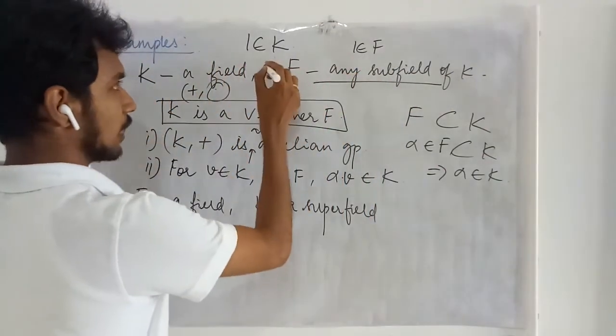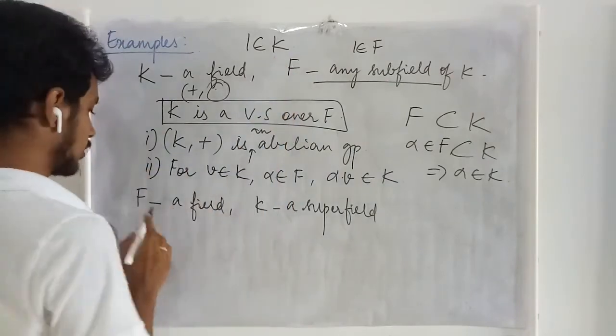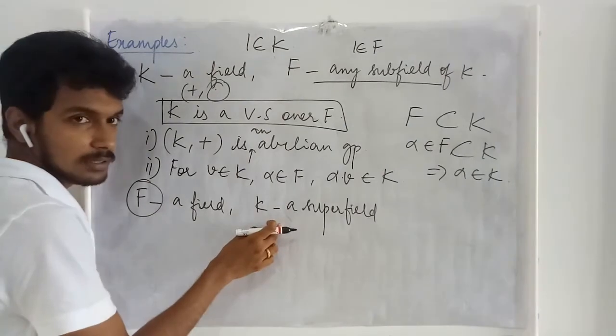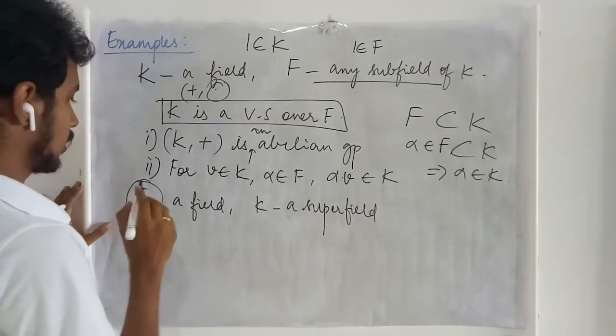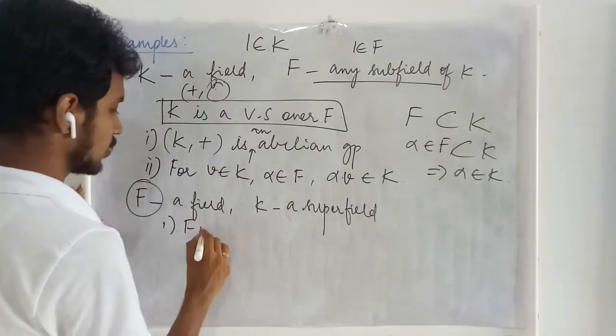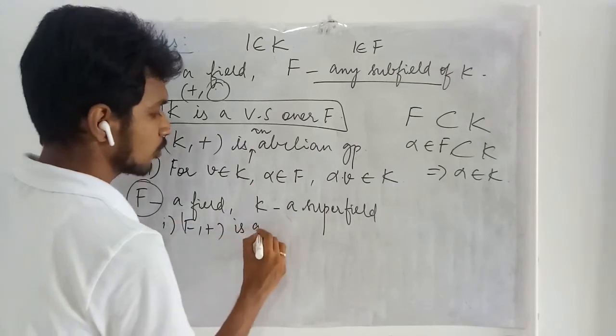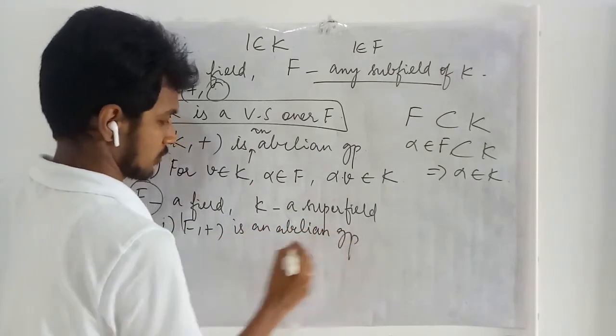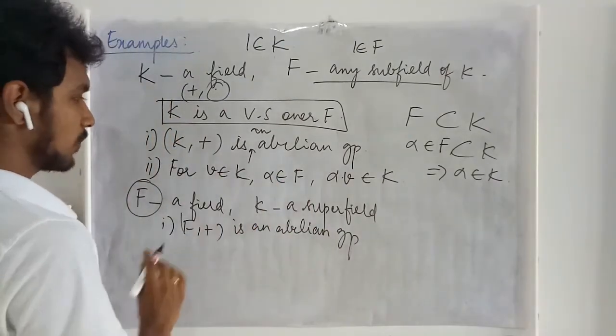That is I am just reversing this. Here what I am trying to say is let me check whether this forms a vector space over this. And the addition is an abelian group. Now let me check here.